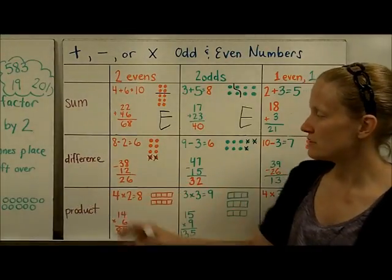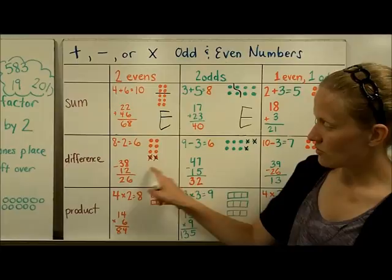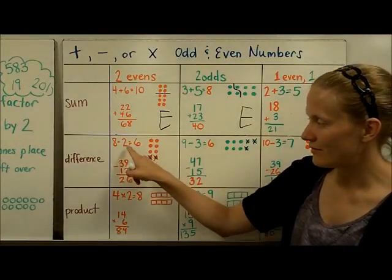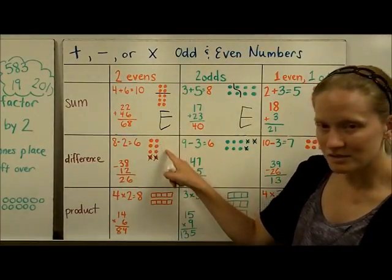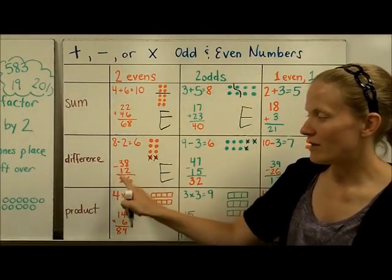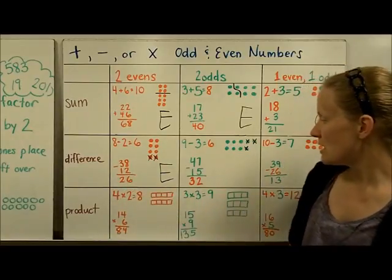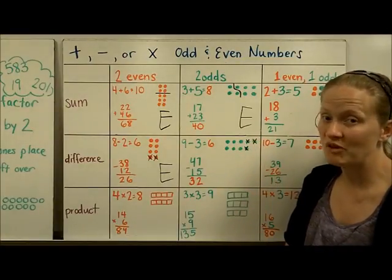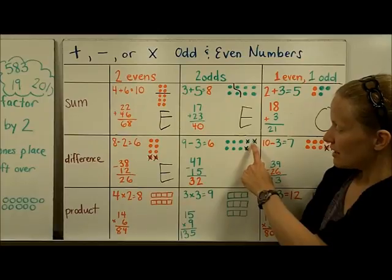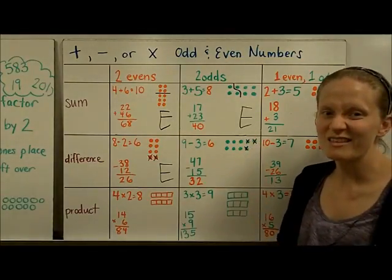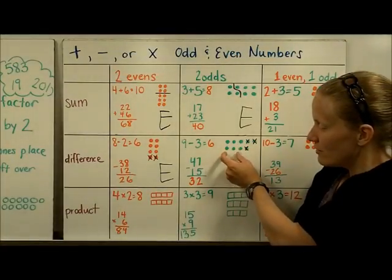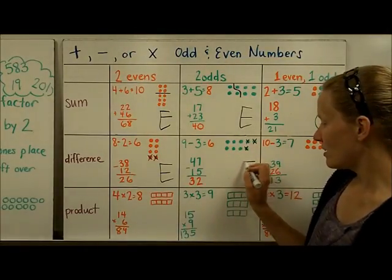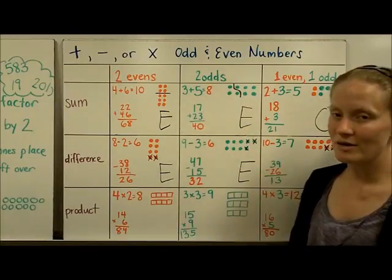Now let's look at subtraction. Starting with 8 circles and taking away an even number — which is a pair or more than one pair — leaves pairs with no remainder, giving an even number. A larger problem confirms this. When you take an odd number and subtract an odd number, removing those circles always takes out the one without a partner, leaving only pairs — three pairs, which is 6. So subtracting two odd numbers always leaves an even number as the difference.